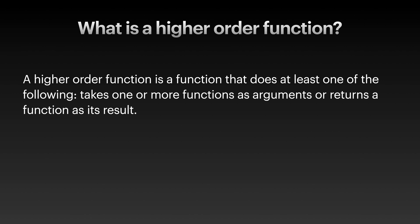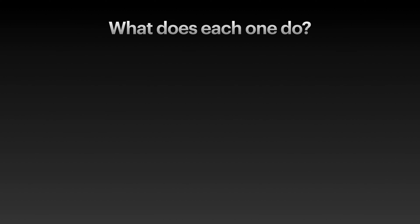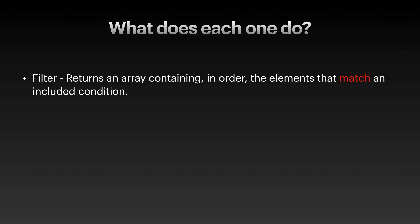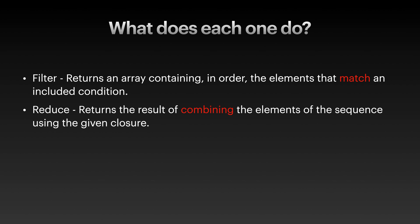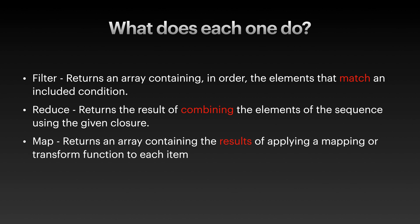So what does each one do? Filter returns an array containing, in order, the elements that match and include the condition. Reduce returns the result of combining the elements of the sequence using the given closure — in other words, it combines all the items in a single collection to create a single new value. Map returns an array containing the results of applying a mapping or transform function to each item.